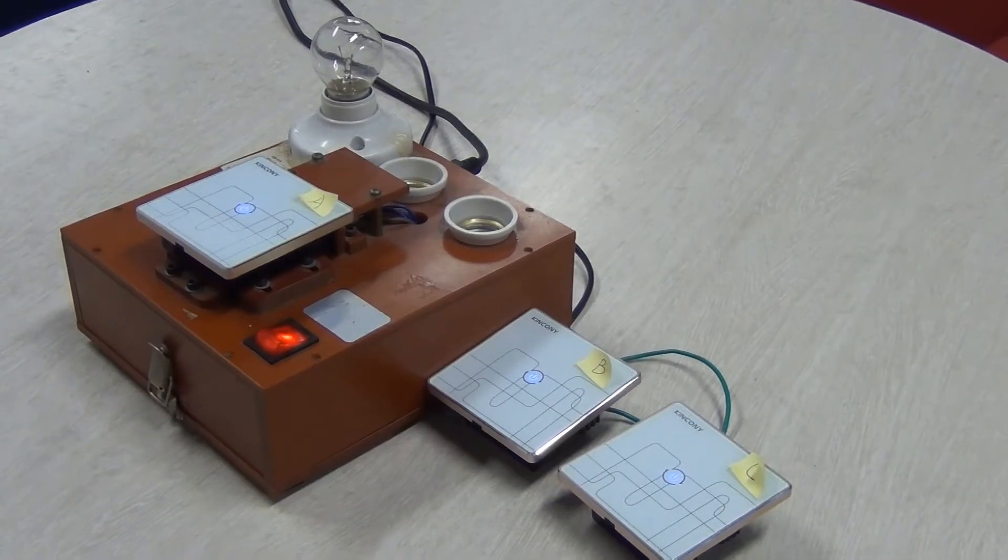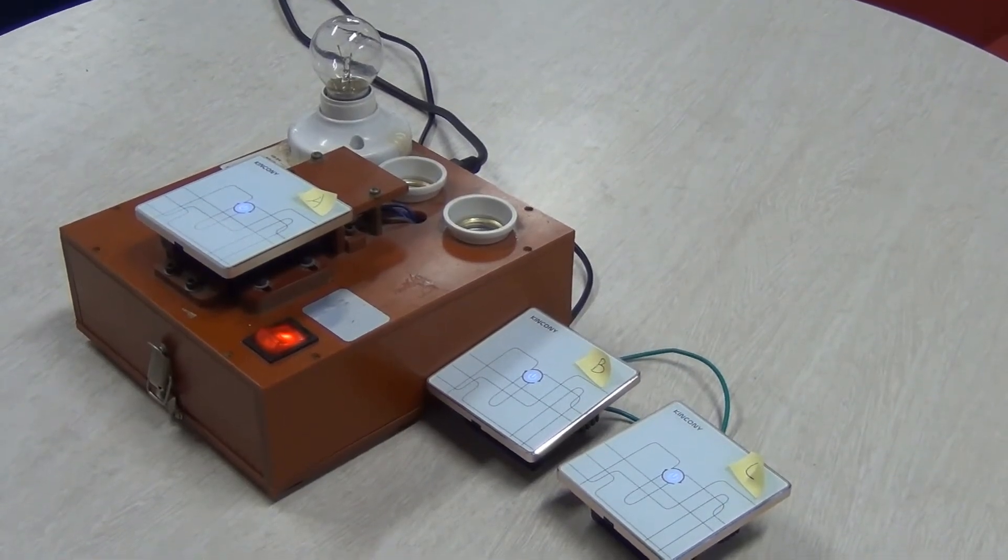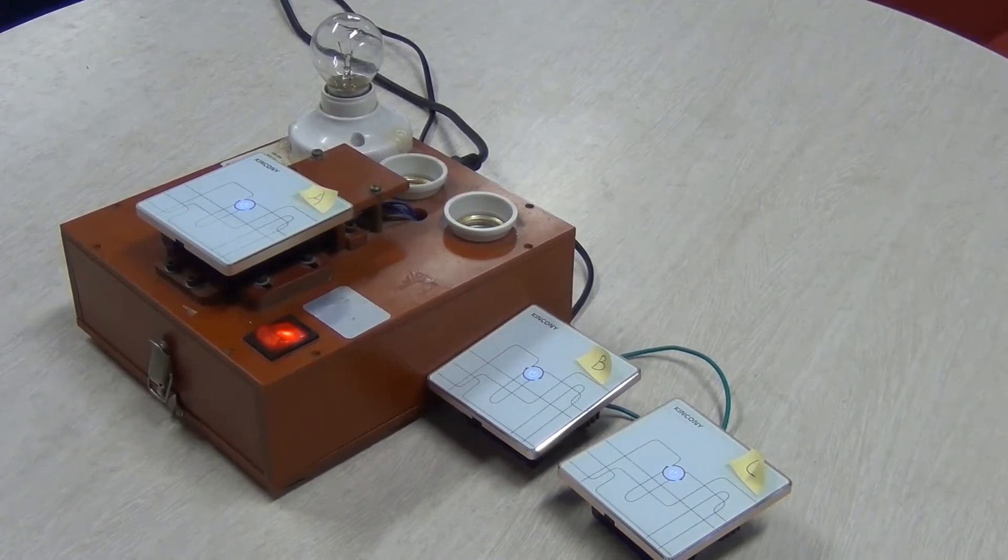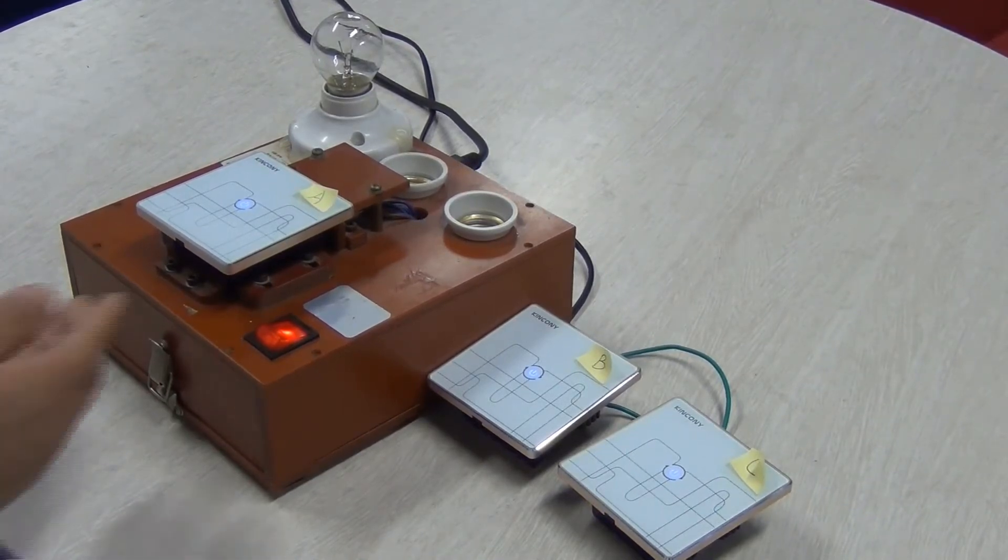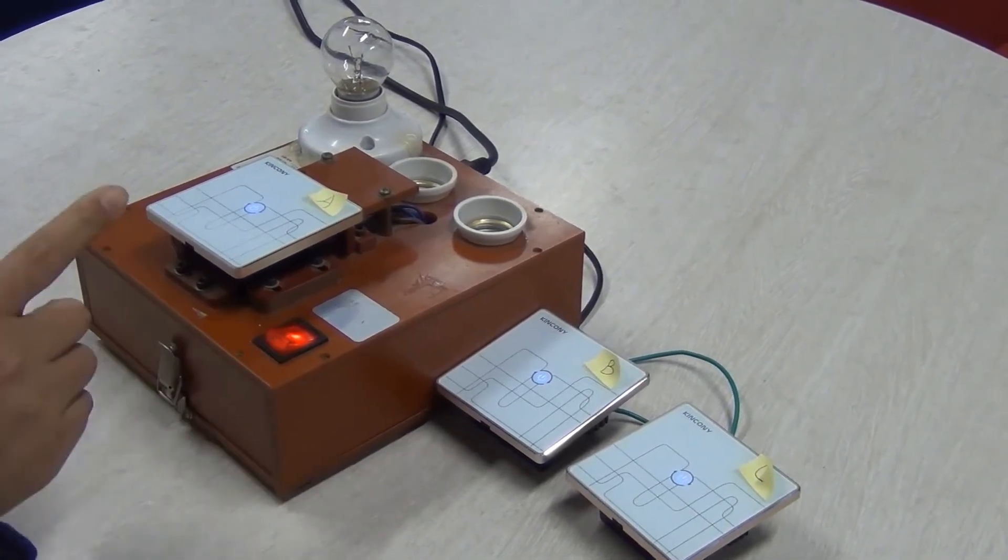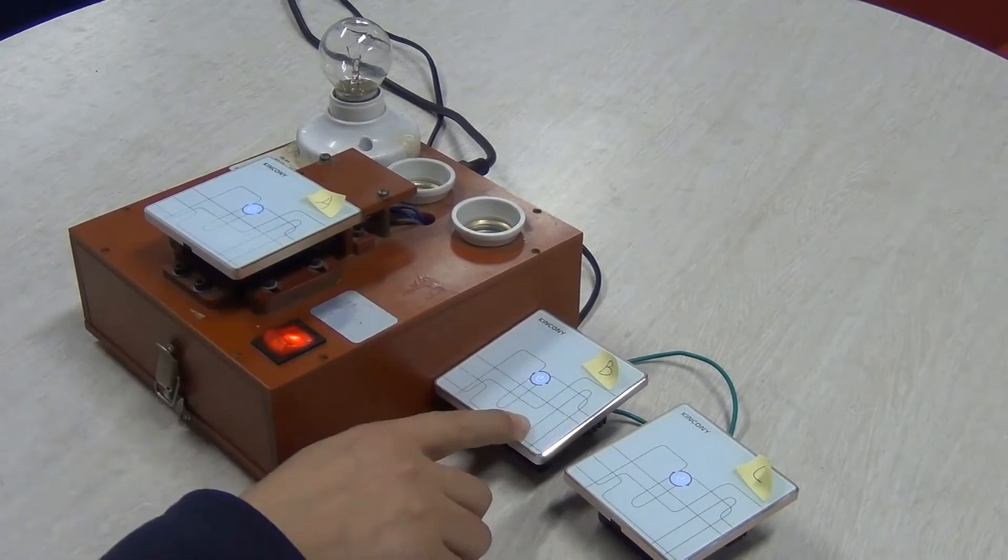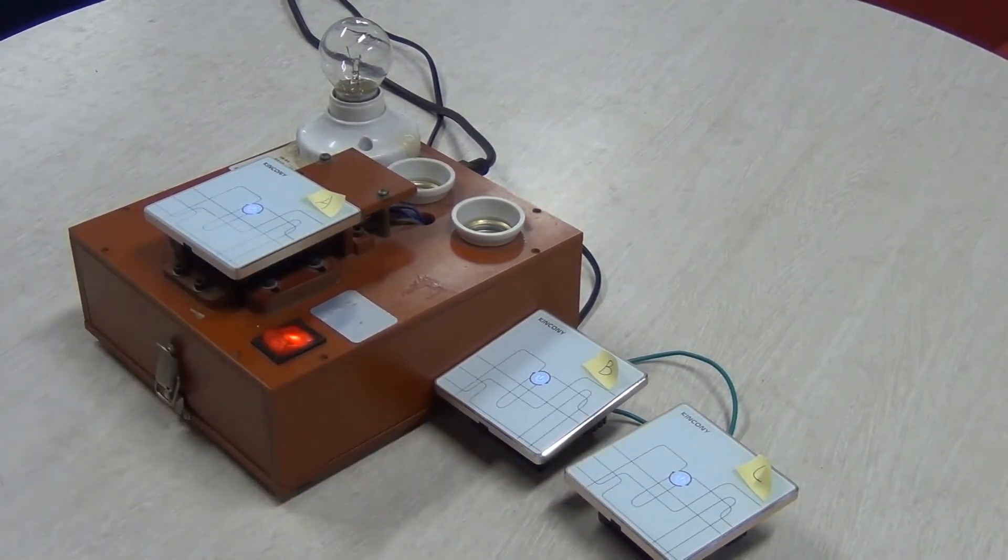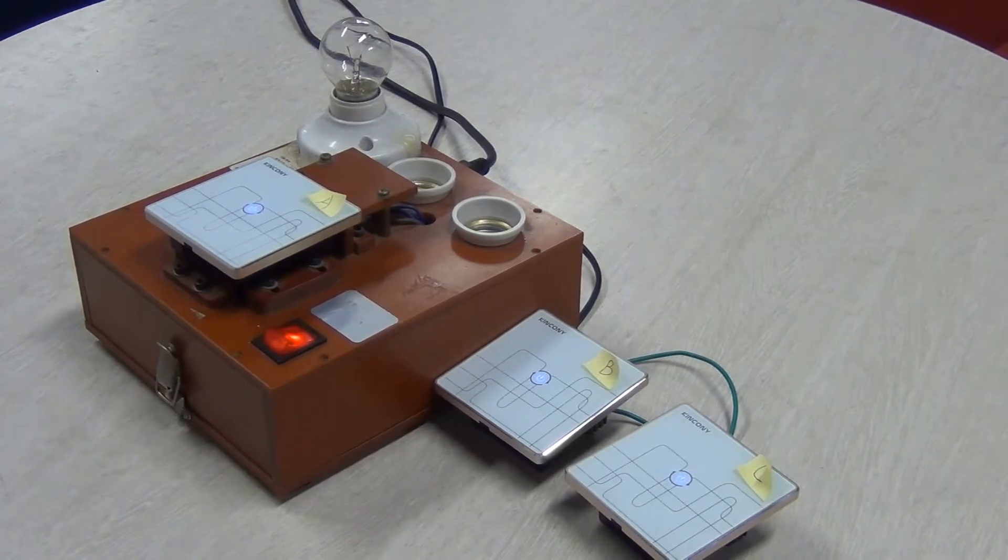Hello everybody, now let me show you how to use the three-control function with our smart line switches. Here we have three one-gang switches. I name them A, B, and C for easy understanding.